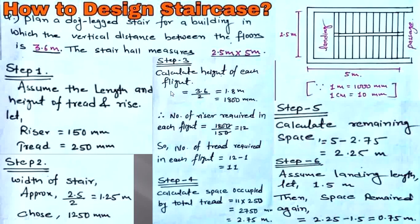Step 3: Calculate the height of each flight. Since there are two flights, divide the vertical distance between floors by 2: 3600 divided by 2 equals 1800 mm (1.8 meters). Number of risers required in each flight equals 1800 divided by 150, which equals 12. Number of treads required in each flight equals 12 minus 1, which equals 11, using the relation: risers = treads + 1.